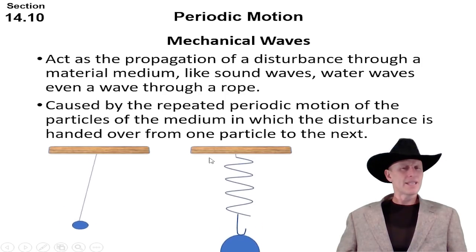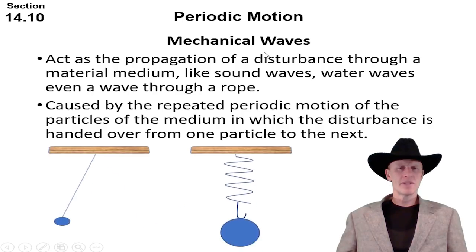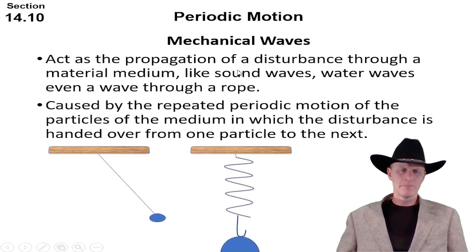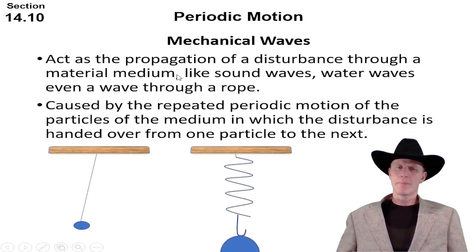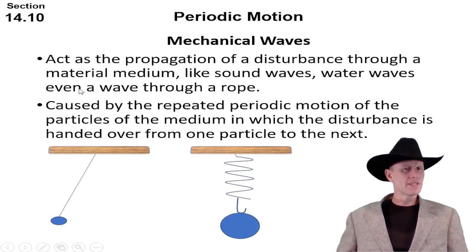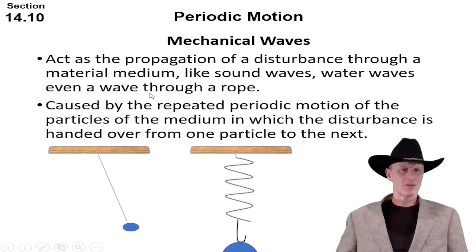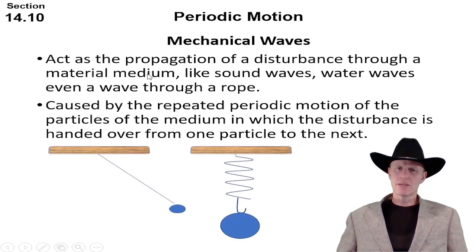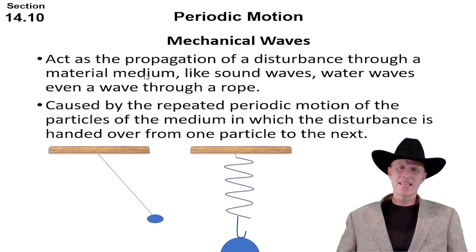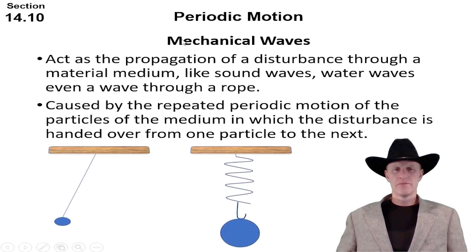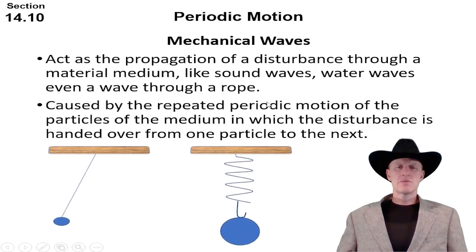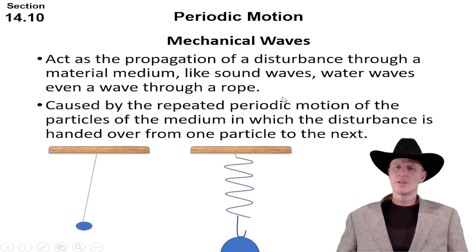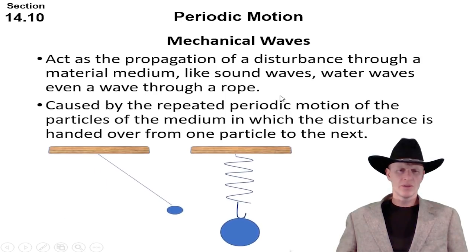But we can get our hands on and measure different things on mechanical waves. These types of waves act as the propagation of disturbance through a material medium. Sound waves are an example, water waves, even waves through a rope would be an example of mechanical waves. The material medium is the thing that the object is traveling through. They are caused by the repeated periodic motion of the particles of the medium in which a disturbance is handed over from one particle to the next.